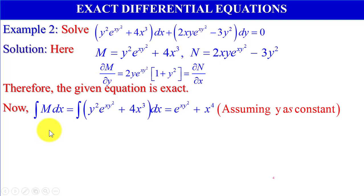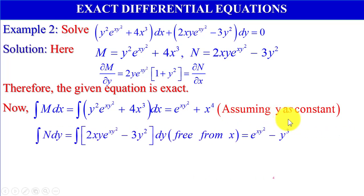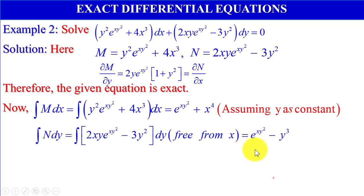Now, integration of M with respect to x equals integration of y squared e to the power xy squared plus 4x cubed dx, which gives e to the power xy squared plus x to the power 4, assuming y as constant. Integration of N dy for terms free from x equals integration of (2xy e to the power xy squared minus 3y squared) dy, giving e to the power x times y squared minus y cubed.